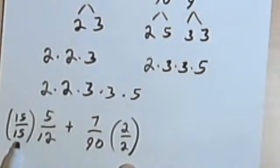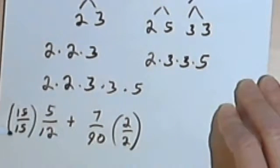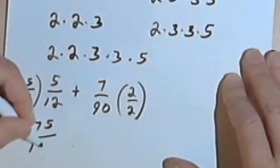And if I want to, I can check this out, 15 times 12 is also going to be 180. So now I just have to do my multiplication. 15 times 5 is going to be 75 over 180.